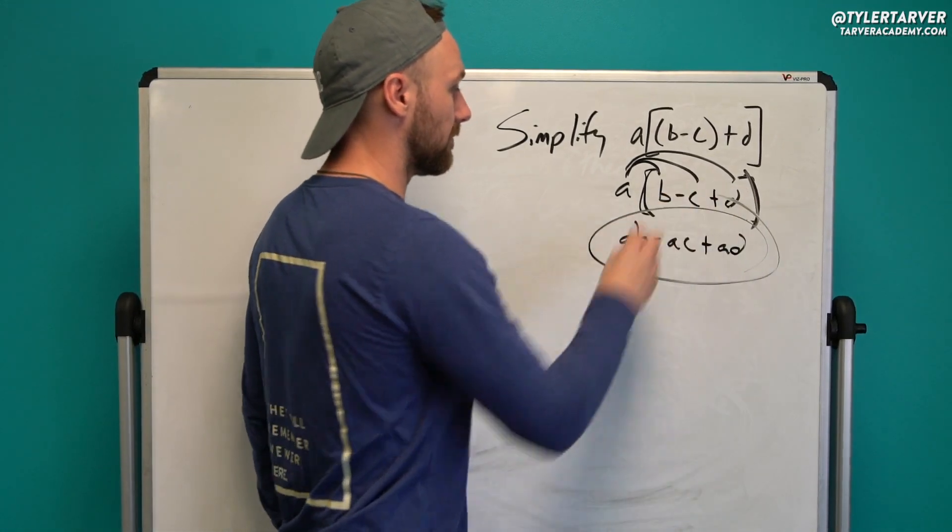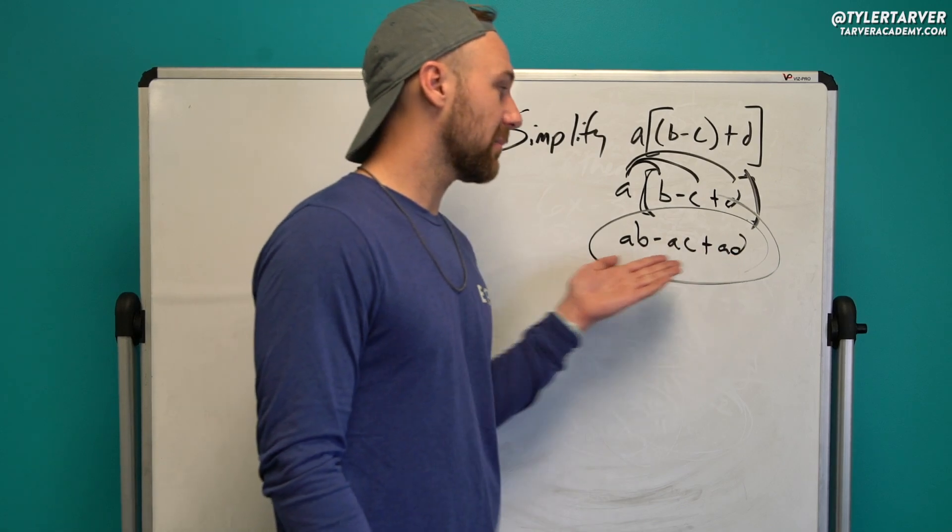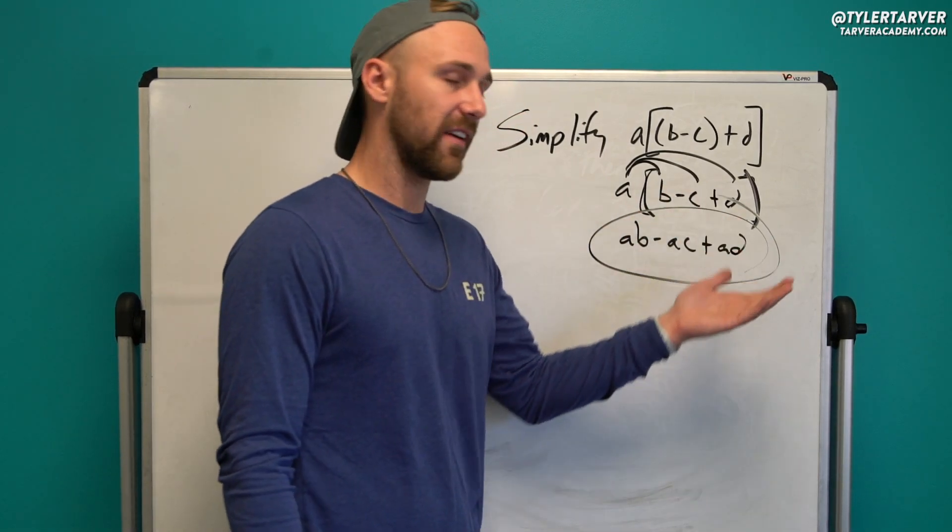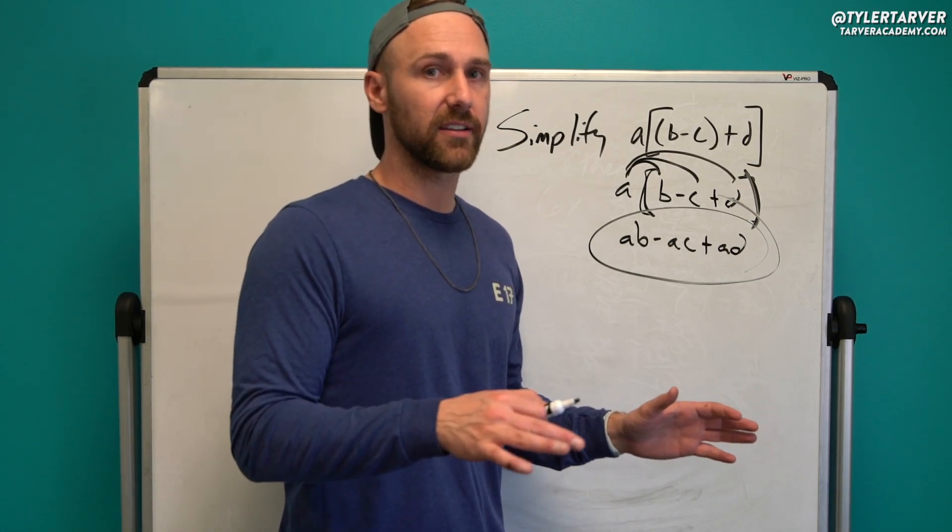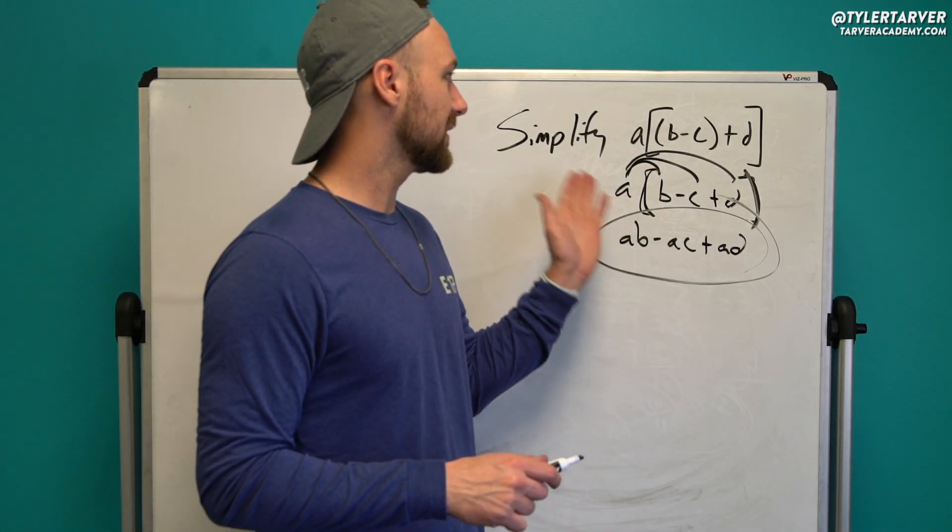And you're done. That's all you would have to do. You can't simplify these because they have different variables. You can't add or subtract different variables. We can multiply them. We can't add or subtract those rando variables. And that's it.